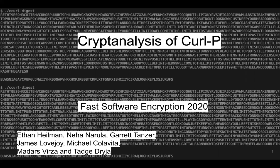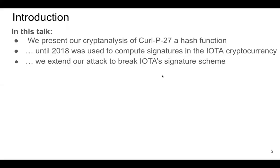Hi everyone. I'm Ethan Heilman and I'll be talking to you about my work on curlP. In this talk I'll present our cryptanalysis of curlP27, a hash function which until 2018 when we published this research was used to compute signatures in IOTA cryptocurrency. In our research we extend this attack to break the IOTA signature scheme for even valid payments.